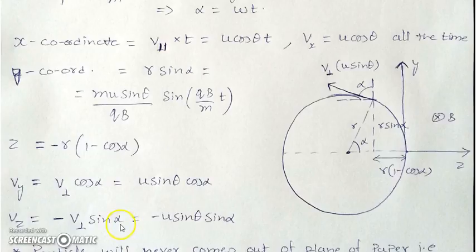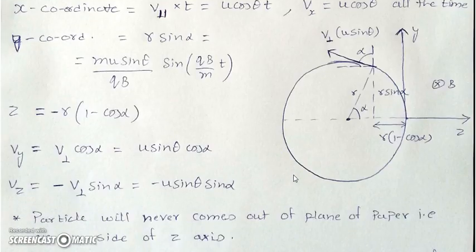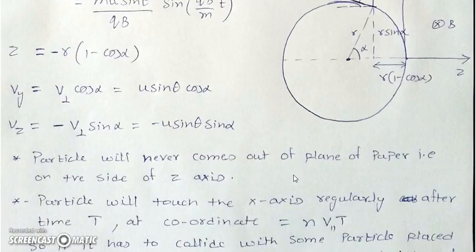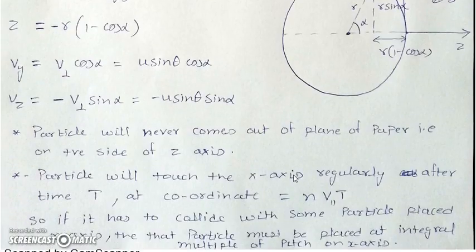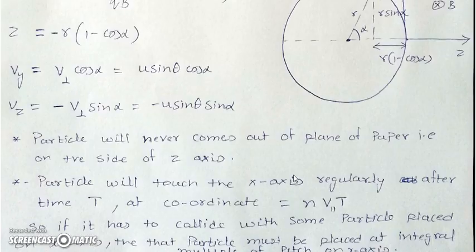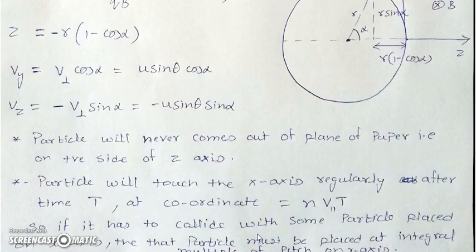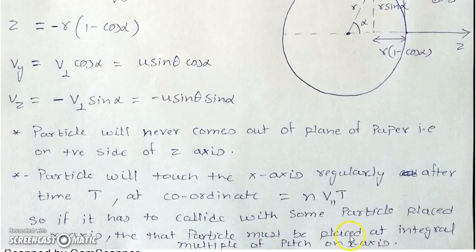So v_z = −v_perp sinα; the negative sign indicates the direction of velocity is toward negative z. Depending on t and α, the z-velocity may momentarily point toward positive z as well. Key observations: the particle will never come out on the positive z-axis side — it moves only on the negative side of the z-axis. The particle touches the z-axis regularly at integral multiples of the pitch. So if we want to collide something with the particle, we must place it at an integral multiple of the pitch on the z-axis. These are the important observations on which exam questions are based.